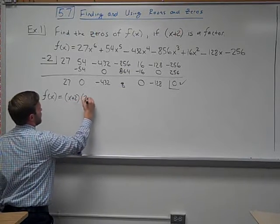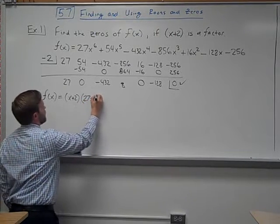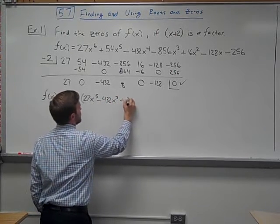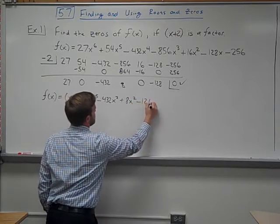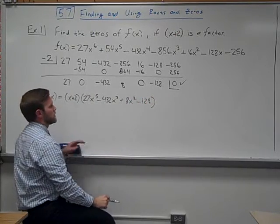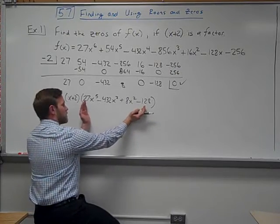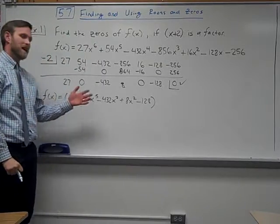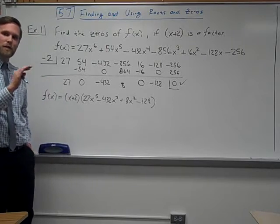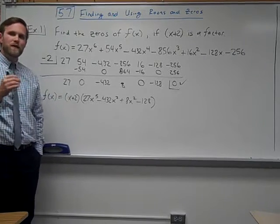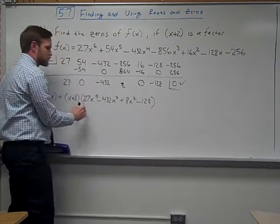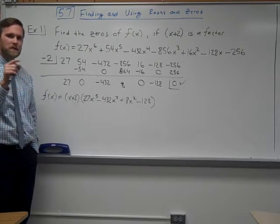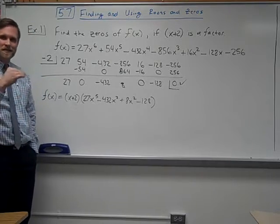We've essentially taken f(x) and changed its appearance without changing its essence. We've taken that function and brought it down: factoring out (x + 2), we have 27x⁵ − 432x³ + 8x² − 128. We took a seven-term polynomial and simply by dividing by that factor, we brought it down to a four-term polynomial. Four-term polynomials are nice to deal with — in fact, last class I noted that every time you have four or more terms you should try grouping first. Pause the video and factor this one step further by grouping.